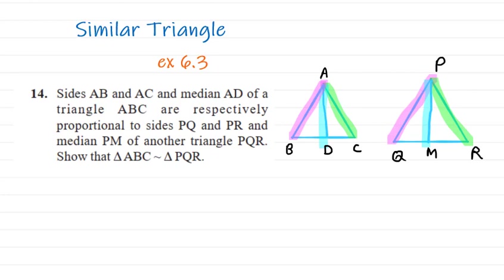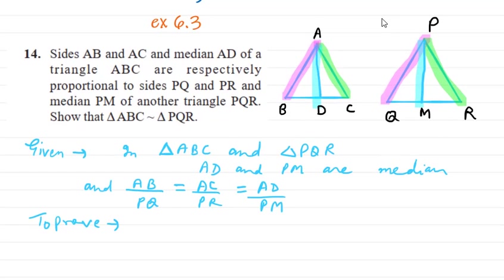In the given part, we write: in triangles ABC and PQR, AD and PM are the medians, and the ratios are equal. We have to prove that triangle ABC is similar to triangle PQR. To prove two triangles similar, we need either SSS (ratio of three sides equal), AA or AAA criteria, or SAS criteria. None of these are directly available here, so we need to do some construction.